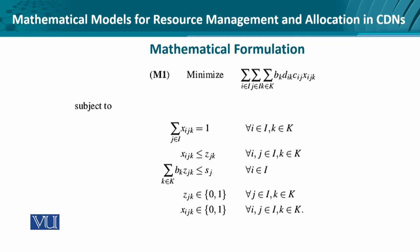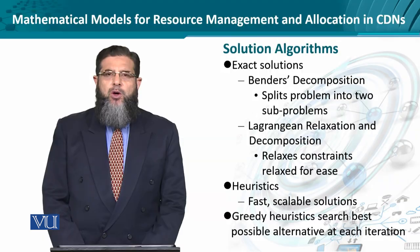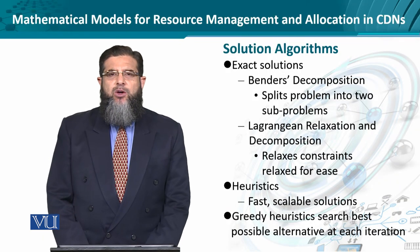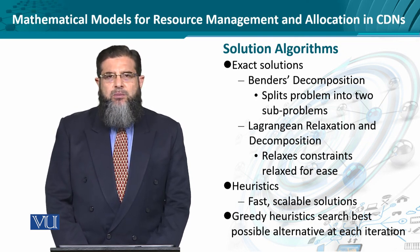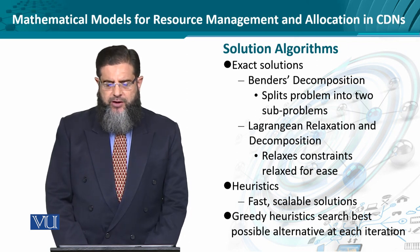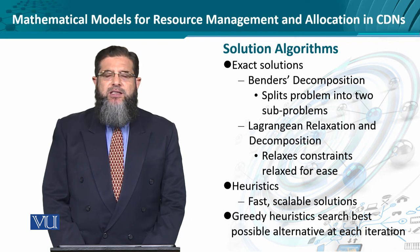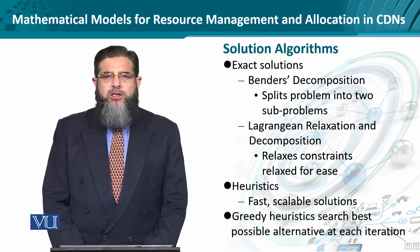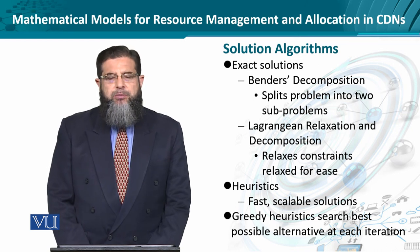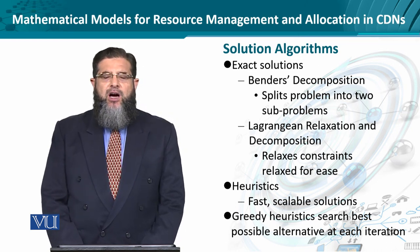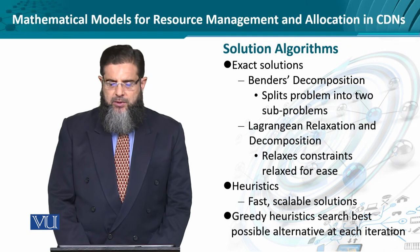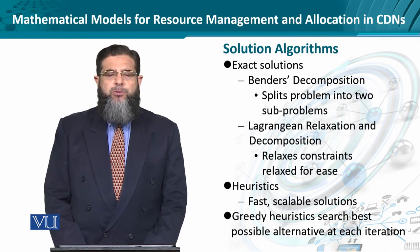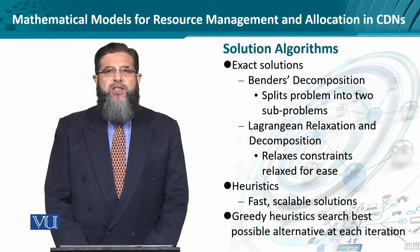With these mathematical equations established, these problems can be solved by some workarounds. The exact solutions, which take more time and are more expensive, could have some simplifying measures. For example, we have something known as Bender's decomposition, which splits a large problem into two smaller sub-problems. Using a binary tree kind of arrangement, a large problem can be divided into sub-problems, and each sub-problem can be further divided into sub-sub-problems, breaking down a very large problem into manageable pieces. If each sub-problem is solved, the overall problem can eventually be solved.